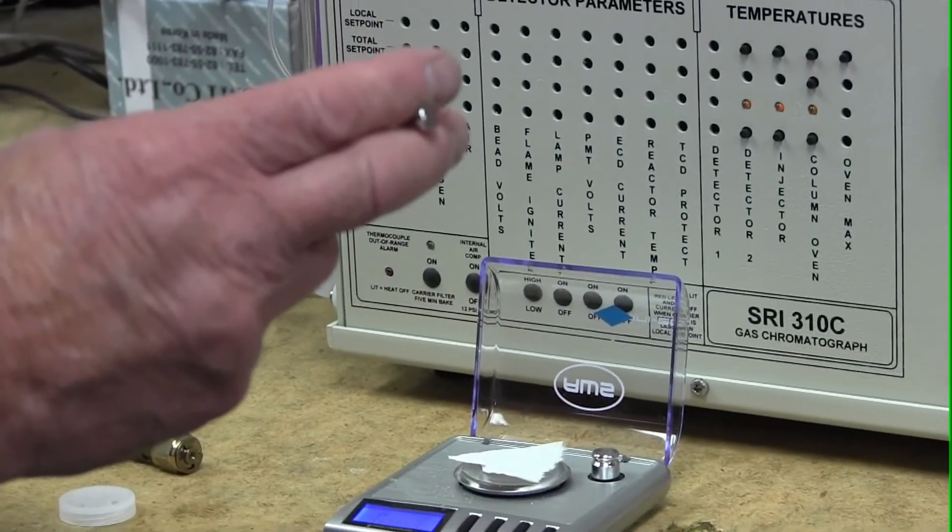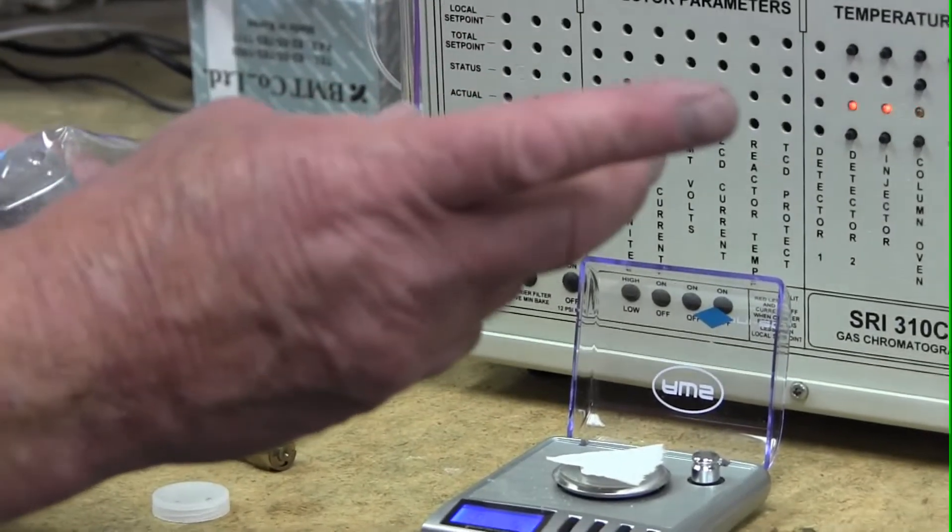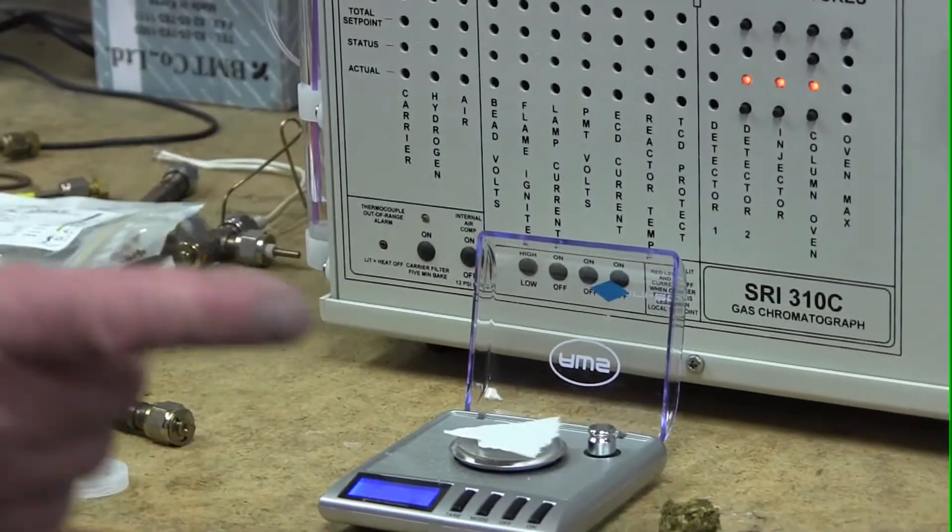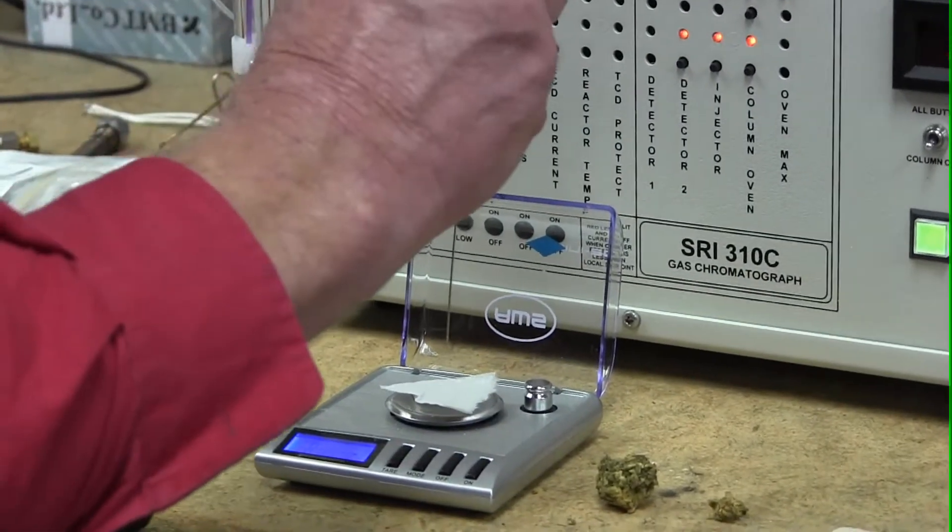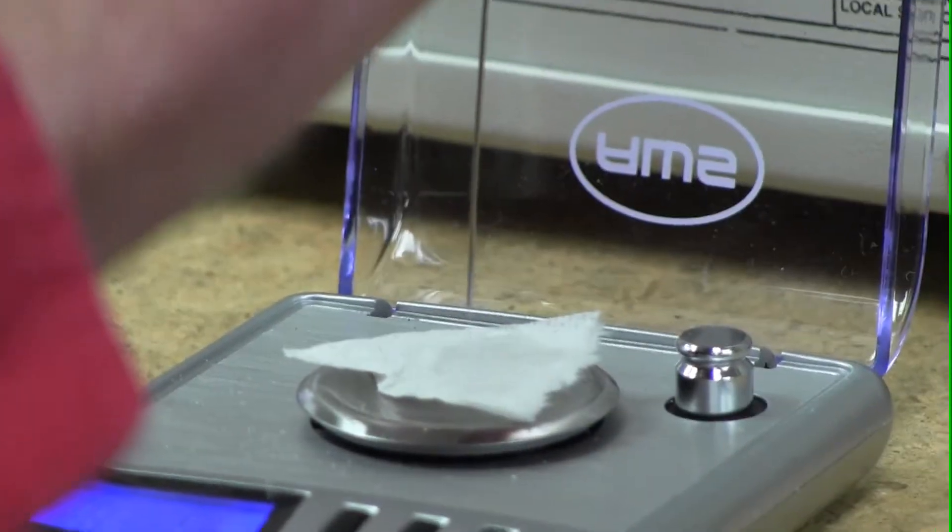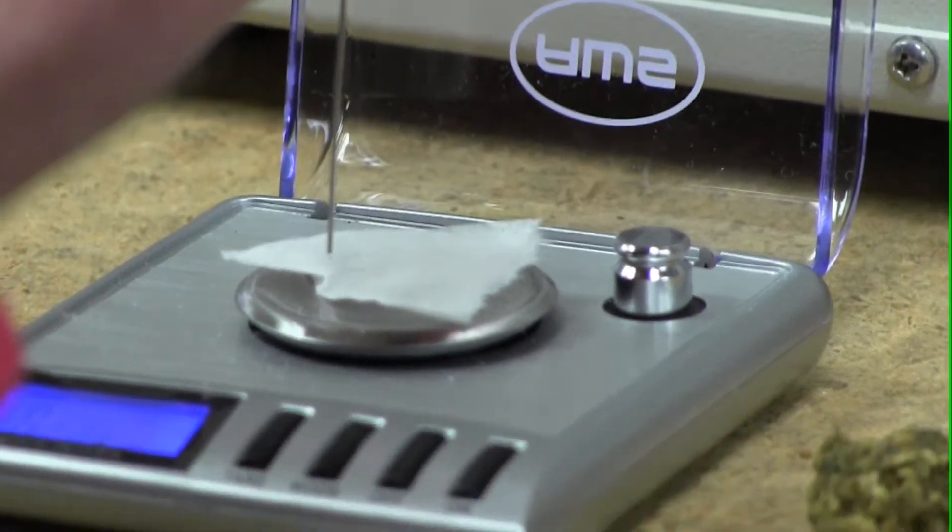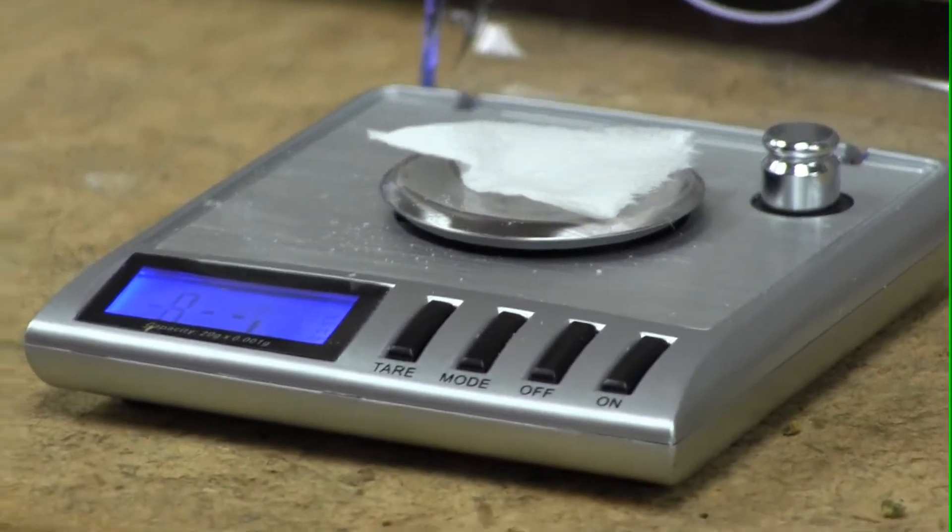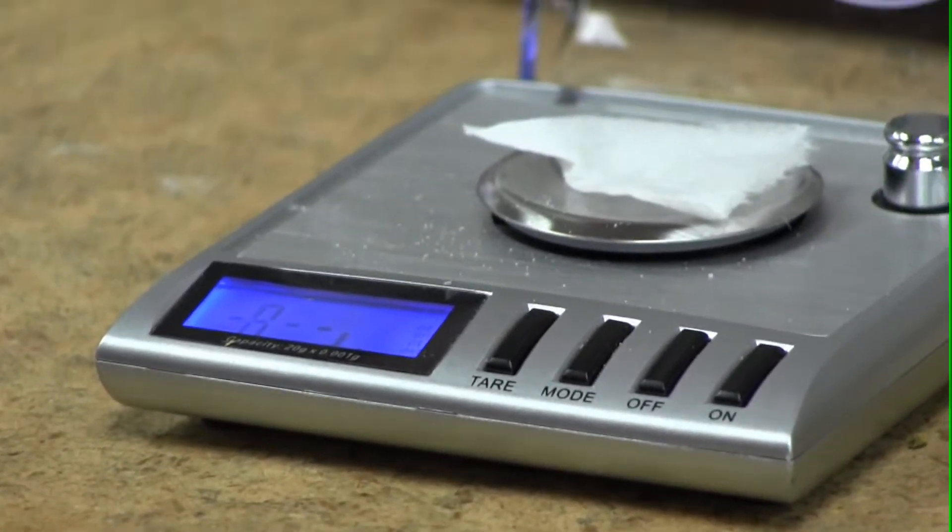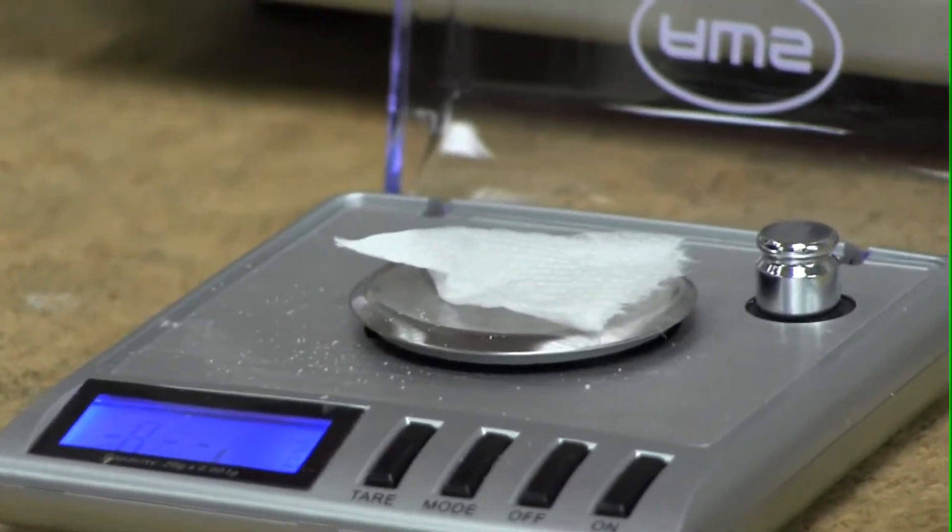Again, there's a little bubble there, but I'm compensating for the bubble. And then you tare the scale out so it reads zero with the paper towel on there, and then you drop the 100 microliters of water onto the paper towel. Now, this is reading 98, so it's within at least 2%, it's an accurate scale.